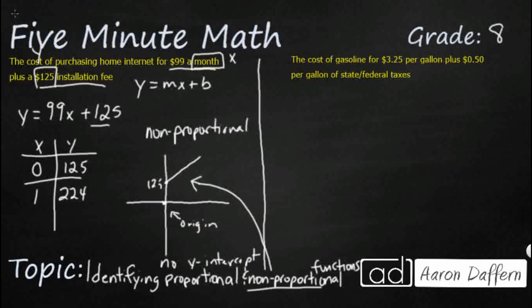Let's check this other one. This one's a little bit tricky. Cost of gasoline for $3.25 per gallon plus, and we're thinking, oh, plus extra. That's going to be non-proportional. But look how they give it to us.